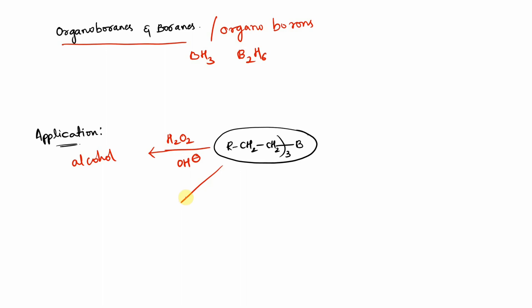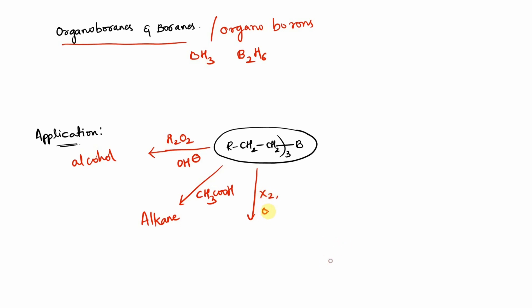Next, if you use the same organoborine but in the presence of acetic acid instead of H2O2 as a side reagent, we will prepare an alkane as they undergo reduction. Next, if you use a molecule of halogen in the presence of basic conditions, we will prepare haloalkanes.